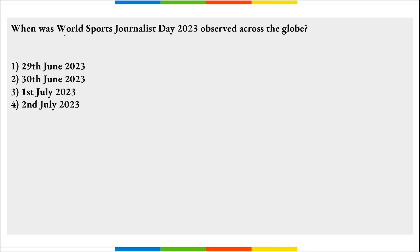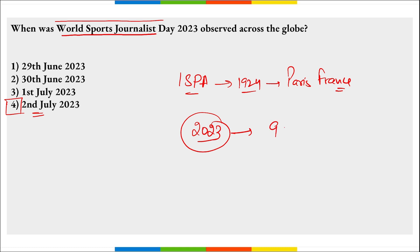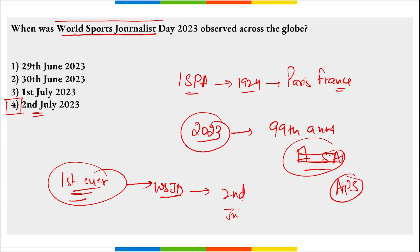When was World Sports Journalist Day observed? On 2nd of July every year, we observe World Sports Journalist Day to acknowledge and honor the hard work of sports journalists across the world. The day commemorates the foundation of the International Sports Press Association, founded in 1924 in Paris, France. In 2023, it marks the 99th anniversary of AIPS. The first ever World Sports Journalist Day was observed on 2nd July 1994.